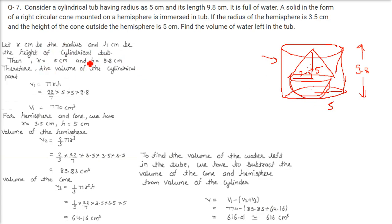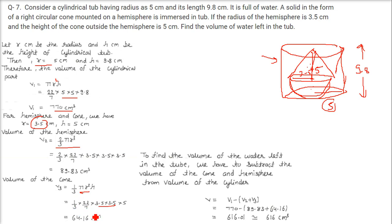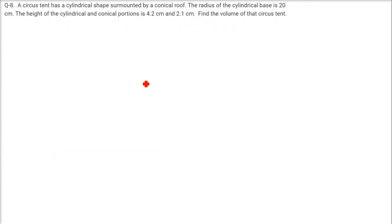The cylinder volume is 770, hemisphere volume plus cone volume equals 89.83 + 64.16. Subtracting the combined object volume from the cylinder volume: 770 − 89.83 − 64.16 gives the volume of water left in the tub as 616 cubic centimeters.